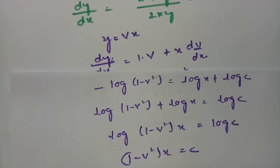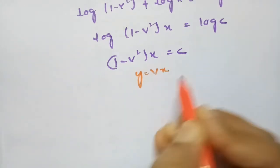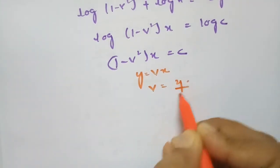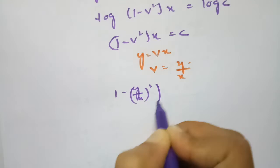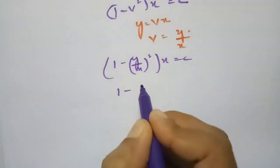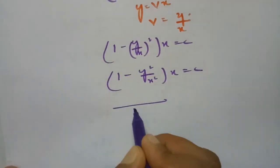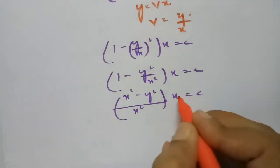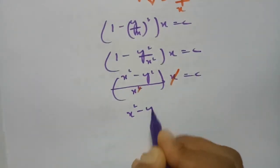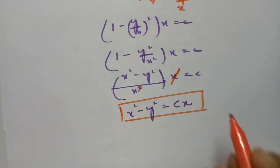Now we back-substitute using y = vx, so v = y/x. Substituting: (1 − (y/x)²)·x = c, which gives (1 − y²/x²)·x = c. Multiplying through with x²: (x² − y²)/x = c. Cancelling one x: x² − y² = cx. This is the final solution.